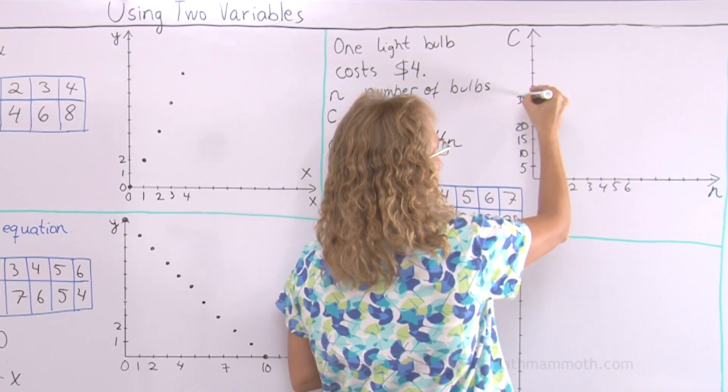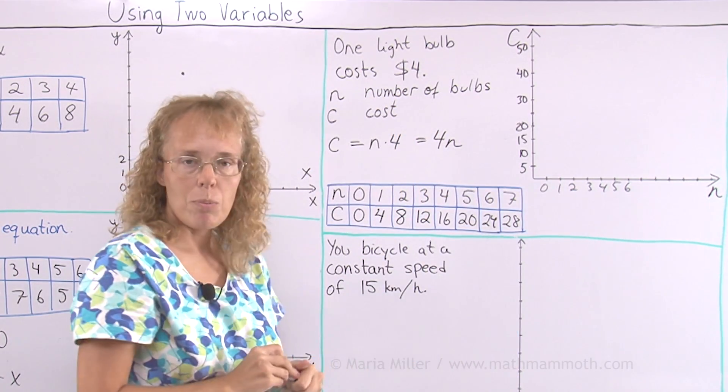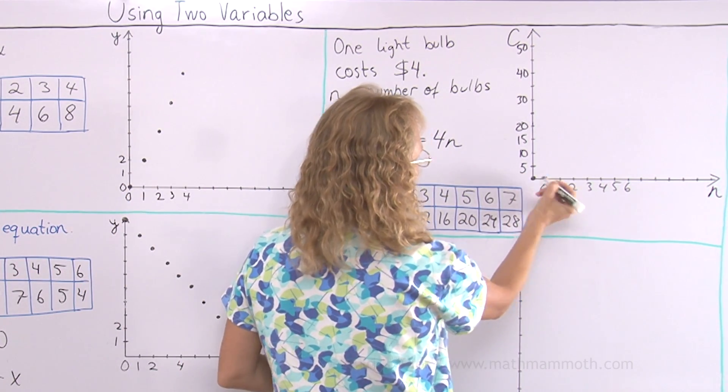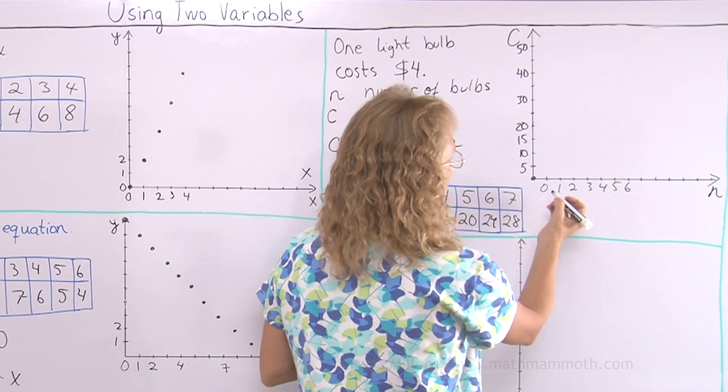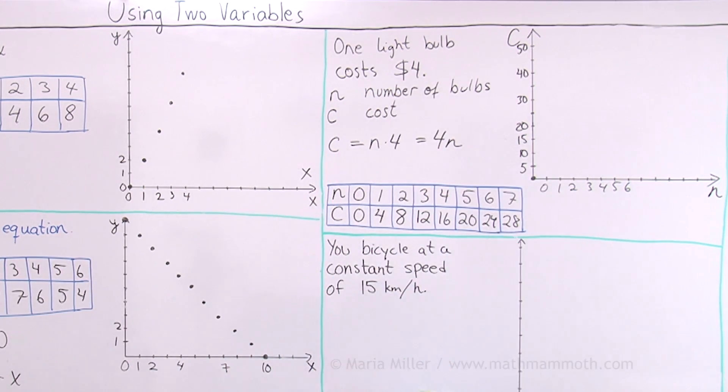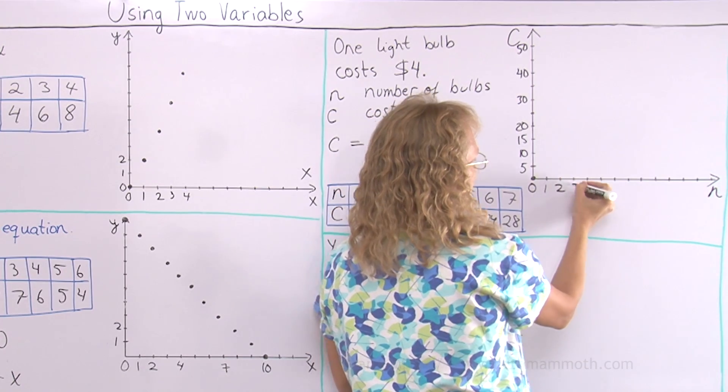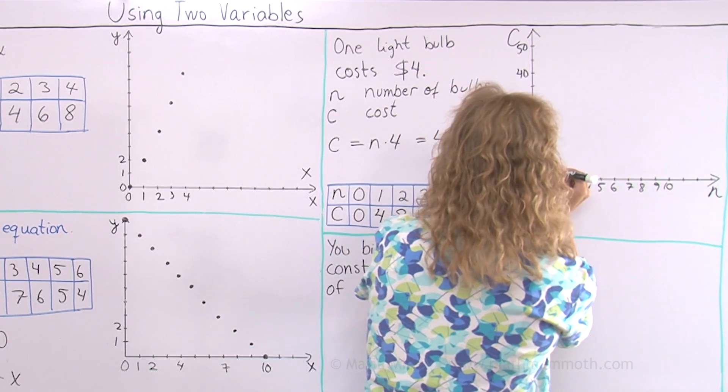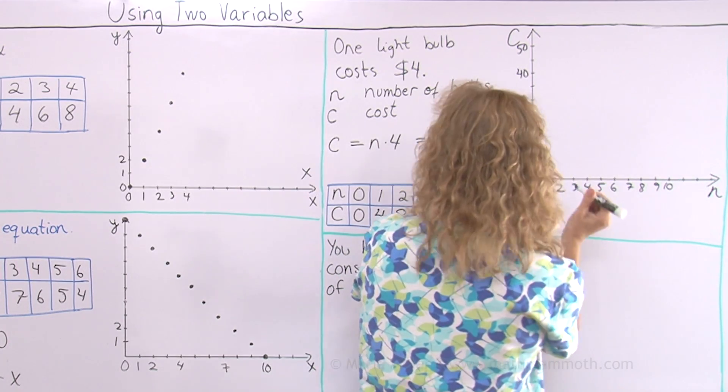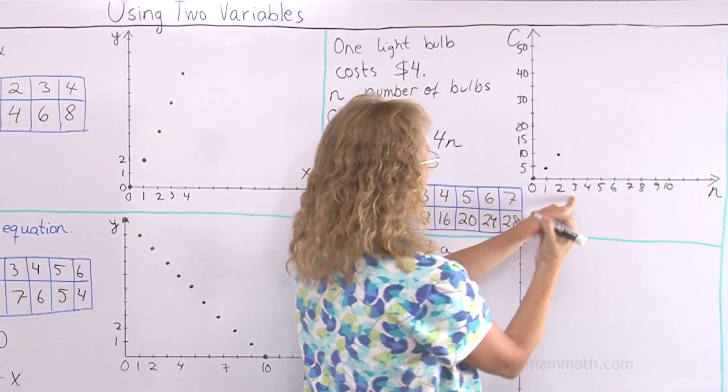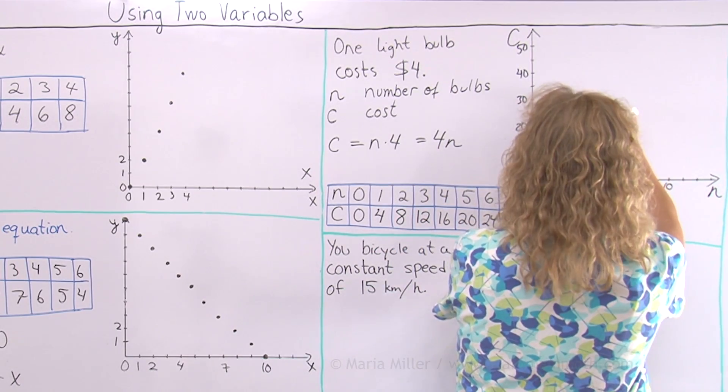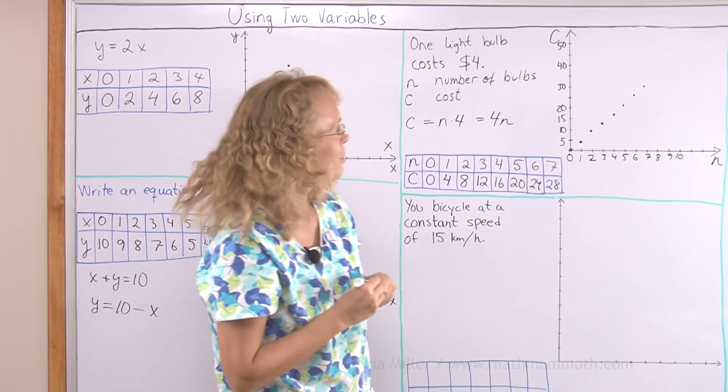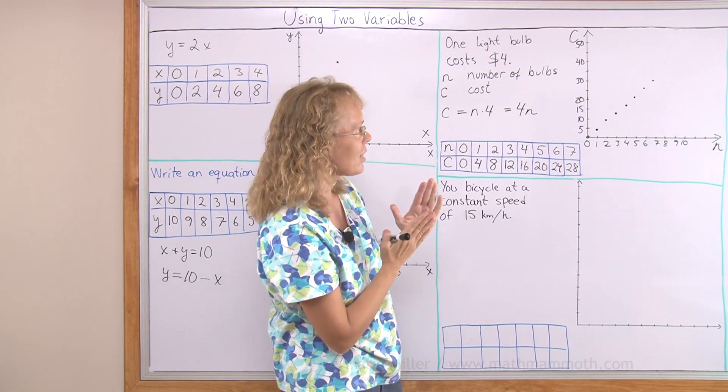If that would be our scale, now I will plot those points there. 0, 0. Of course here. 1 and 4. I'm sorry. 0 is here. 0, 0 and then 1, 4 would be 1 and then somewhere there. 2, 8, 3, 12, 4, 16, 5, 20. And so on. Again, we get a nice linear pattern. It goes as if in a line.